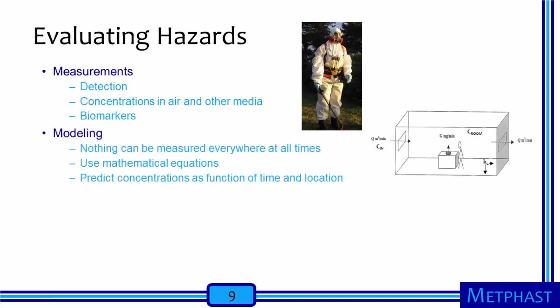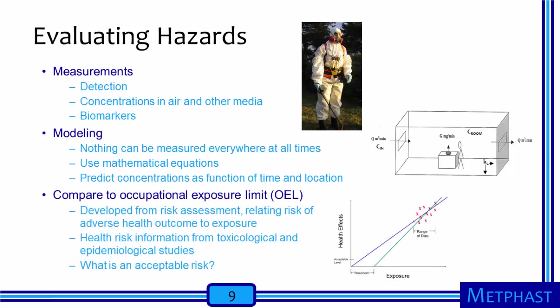We can also attempt to evaluate hazards using modeling. We are not able to measure everything everywhere at all times. One way to get around these limitations is to use mathematical models to estimate exposures, predicting concentrations or other relevant measures as a function of both time and location. Ultimately, we will compare these measurements or modeling predictions to some sort of occupational exposure limit. These limits are developed through the risk assessment process: we relate health risk information from toxicological and epidemiological studies to exposure or dose data, decide what is an acceptable risk, and set an exposure limit accordingly.